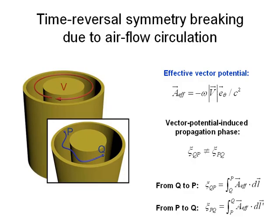Here, we introduce a circulating airflow into an acoustic ring cavity to break the time-reversal symmetry. The circulating airflow will generate an effective vector potential, and it will provide an additional phase for sound propagation inside the ring. But this phase is different for clockwise and counterclockwise propagation, therefore leading to the time-reversal symmetry breaking of this acoustic system.